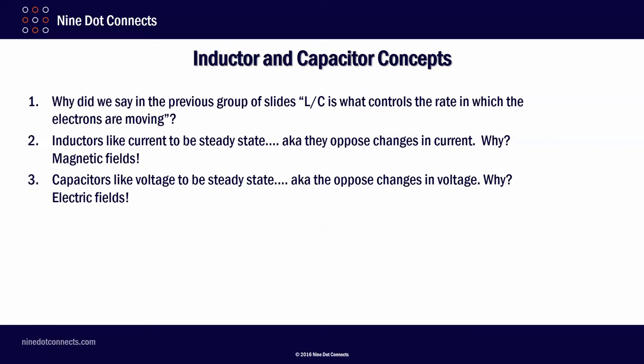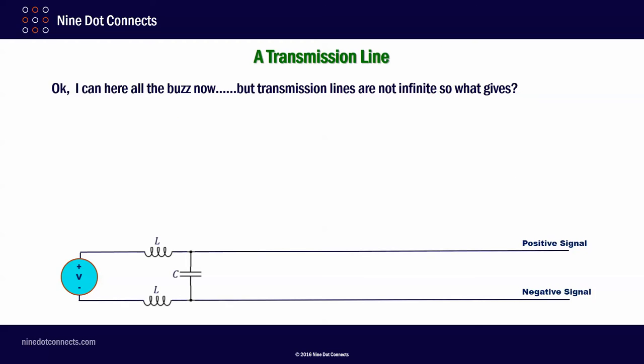So the question is, why did we say in the previous group of slides that L and C controls the rate in which electrons are moving? Well, we have to go back to concepts of what an inductor and capacitor are. Inductors like current to be steady state. They oppose changes in current. Why? Because it takes energy to build or change magnetic fields. Capacitors like voltages to be steady state. It's one of the reasons why I use them as filters. They oppose a change in voltage. Why? Because you have an electric field. The electric field doesn't like to be changed.